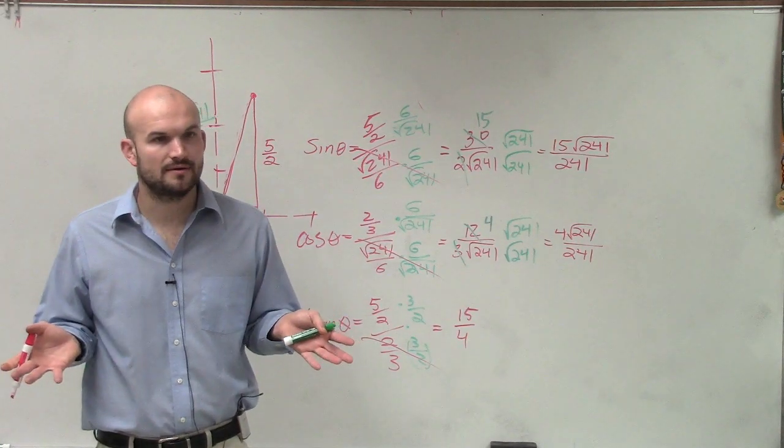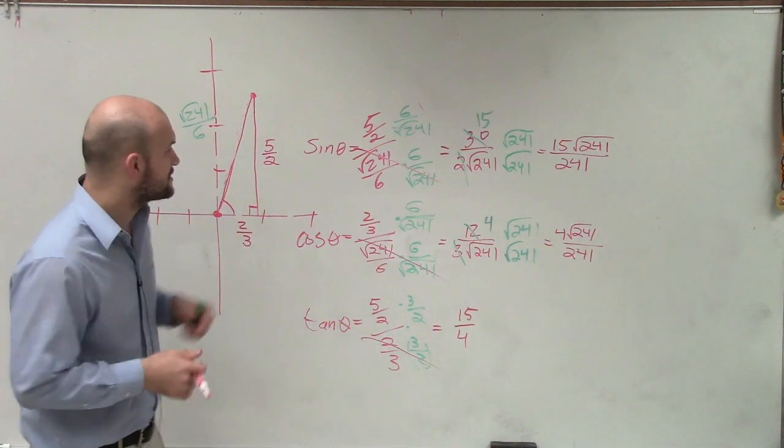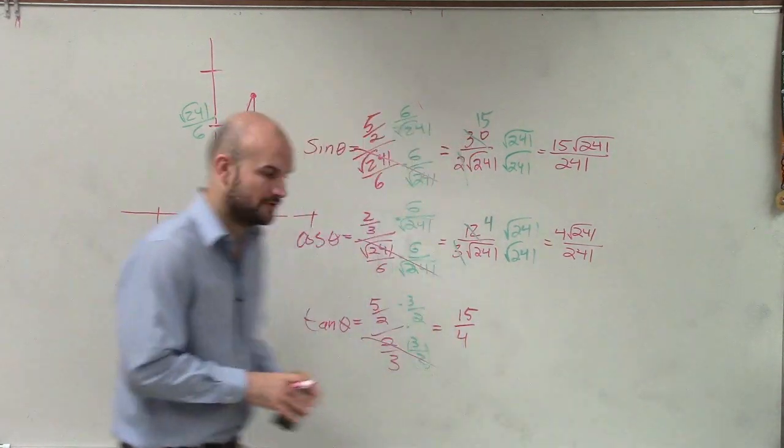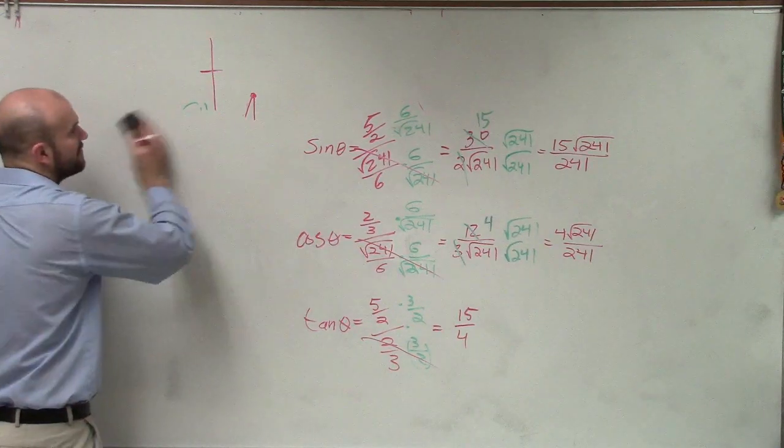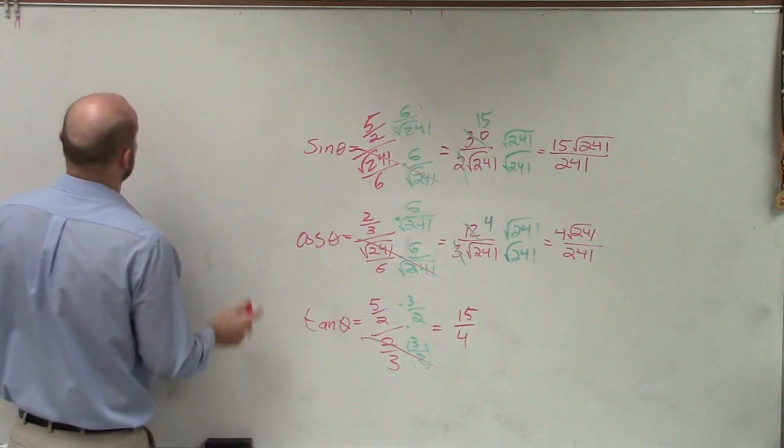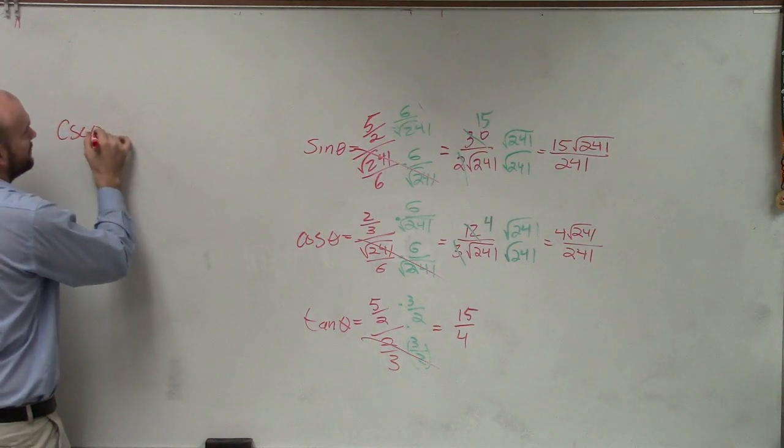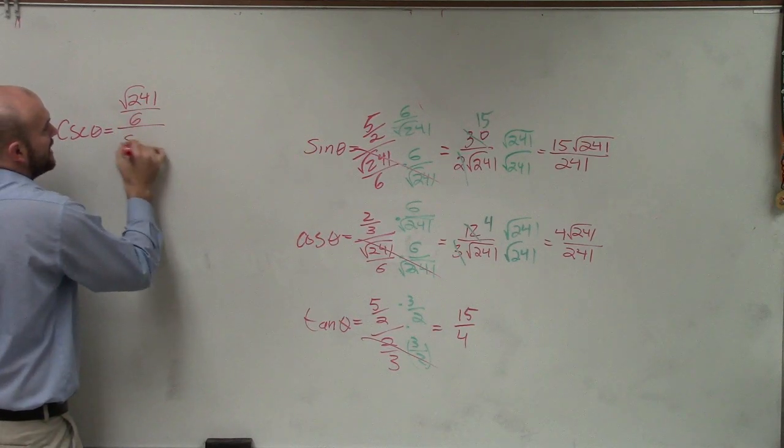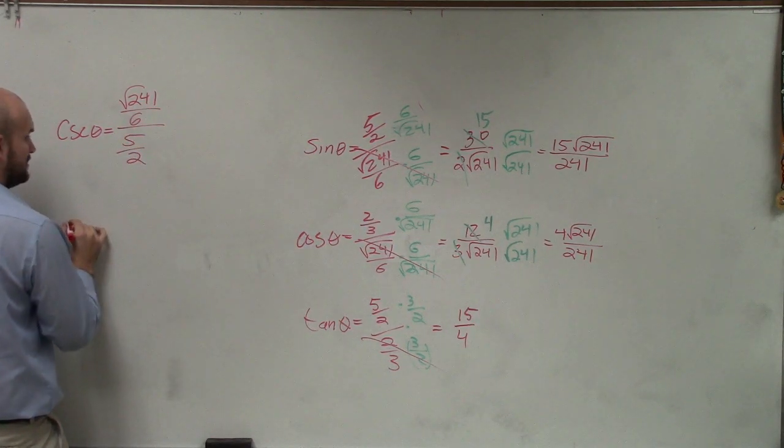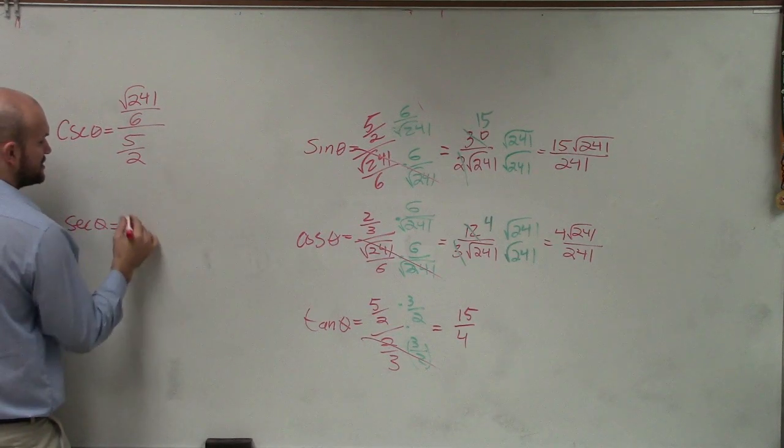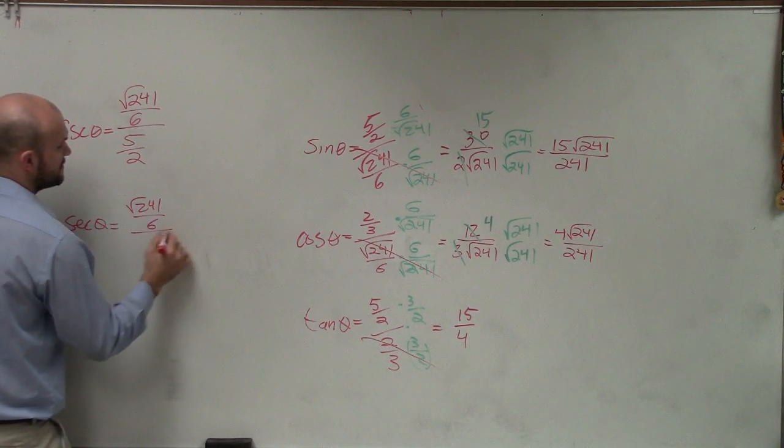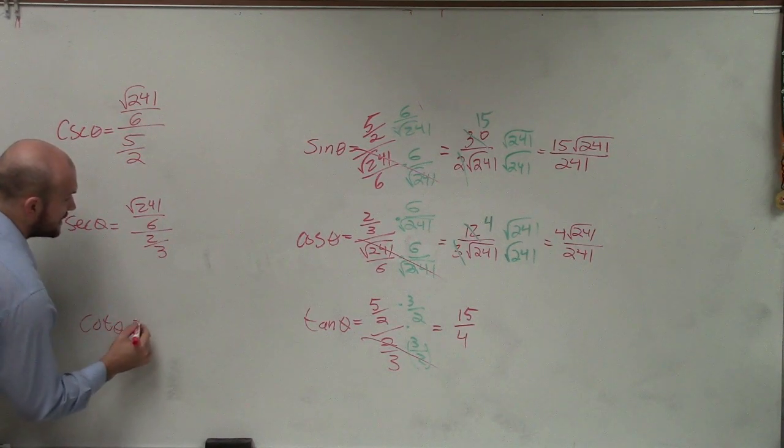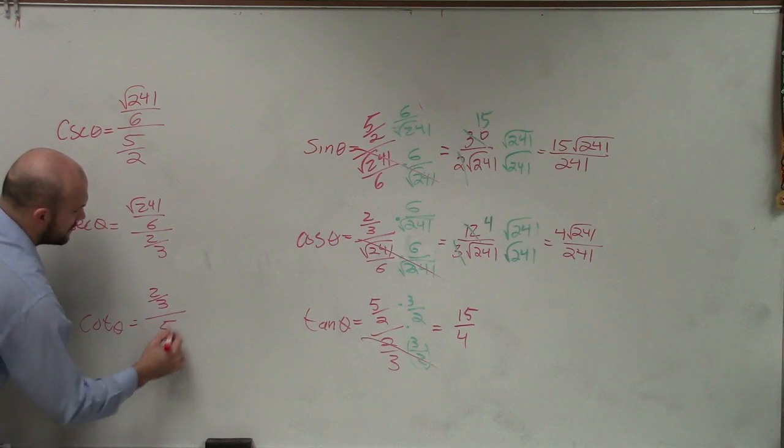Anybody have any questions on that? Remember, if I was going to go through... Sure, I'll go through this. I think I said find all the solutions, find 6 trigonometric. So if I was going to go and find the cosecant of theta, remember that's just the reciprocal. So now that's going to be square root of 241 over 6 divided by 5 halves. The secant of theta is just going to be reciprocal of that, square root of 241 over 6 divided by 2 thirds. And the cotangent of theta is going to equal 2 thirds divided by 5 halves.